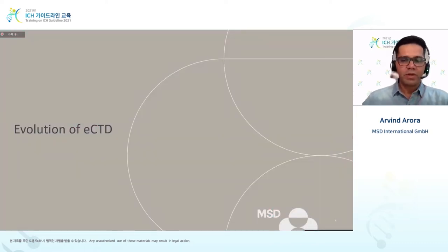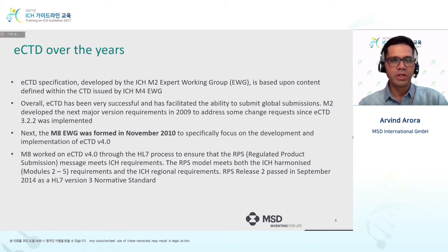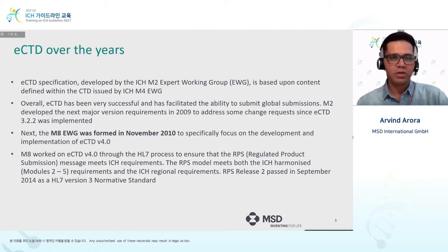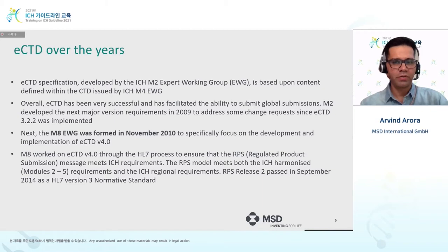We're going to start with the evolution of ECTD. The current version 3.2 was developed by the M2 expert working group, based upon the CTD guidelines under ICH M4. Since 2009 there have been requests about how to change the format and bring new functionality, so an ICH M8 working group was created in 2010. M8 worked closely with Health Level 7 to ensure they were working on the RPS standard — regulatory product submission — which is much broader than just pharmaceuticals.